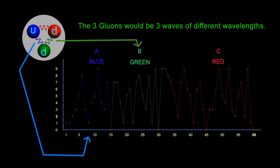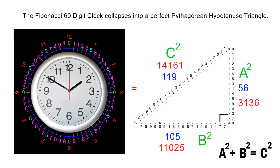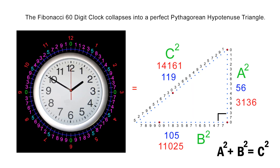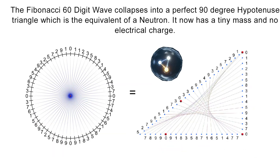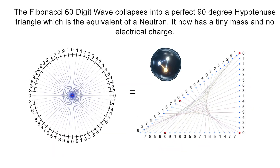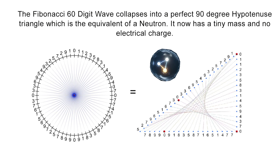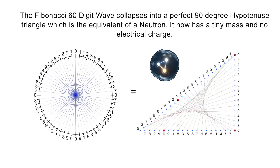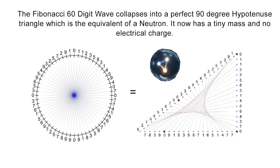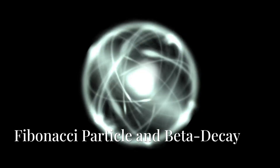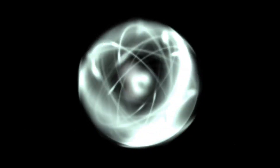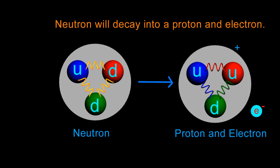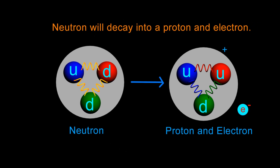What science calls positive and negative charge are only mathematically encoded bits of information with a programmed or simulated energy. The Fibonacci 60-digit clock, which mathematically represents the underlying electromagnetic field, collapses into the Fibonacci 90-degree triangle. This is the mathematical equivalent of a neutron and is the primary particle used to construct the world we see around us. Because the Fibonacci clock is no longer a circular wave, it is no longer held in equilibrium — it now has a tiny virtual mass, but still no electrical charge. However, this virtual particle is extremely unstable and quickly beta decays into a proton that has a positive charge and an electron that has a negative charge to form the most basic atoms.